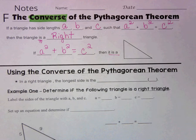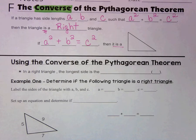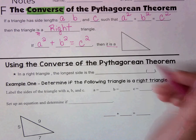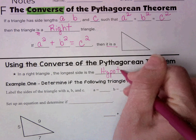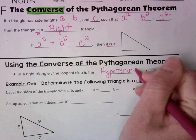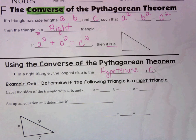So remember, in a right triangle, the longest side is called the what? It's called the hypotenuse. That's important because we have to know which side to call side C.